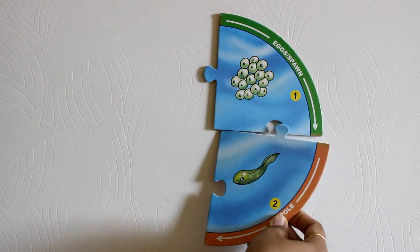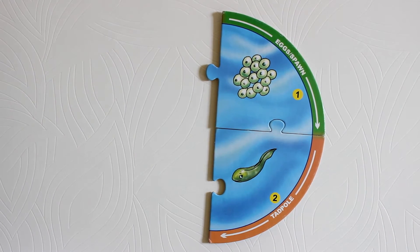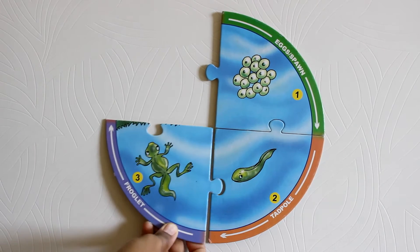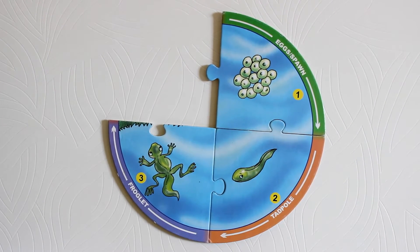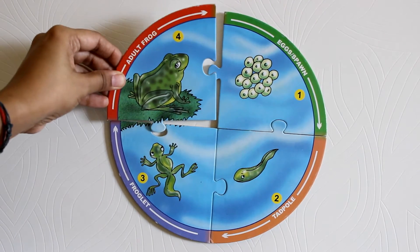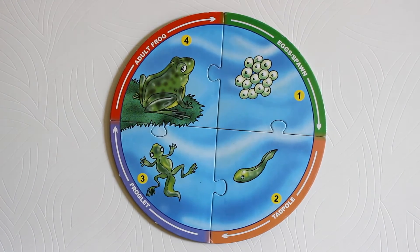At stage two, the eggs transform into a tadpole. Then at stage three it turns into a froglet, and lastly at stage four it becomes an adult frog.